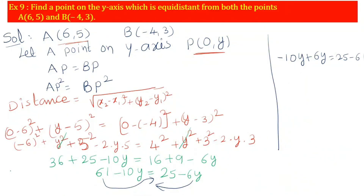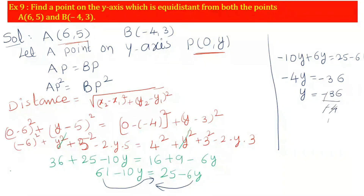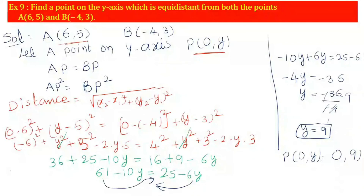So -4y = 25 - 61 = -36. The negatives cancel: y = -36 ÷ -4 = 9. Therefore y = 9, and the required point P = (0, 9).